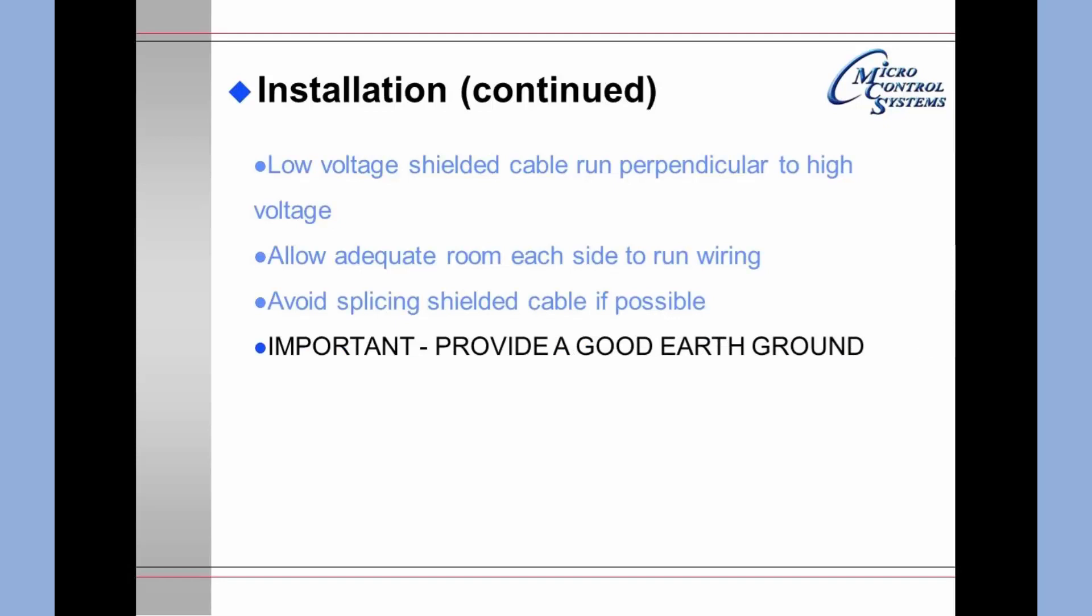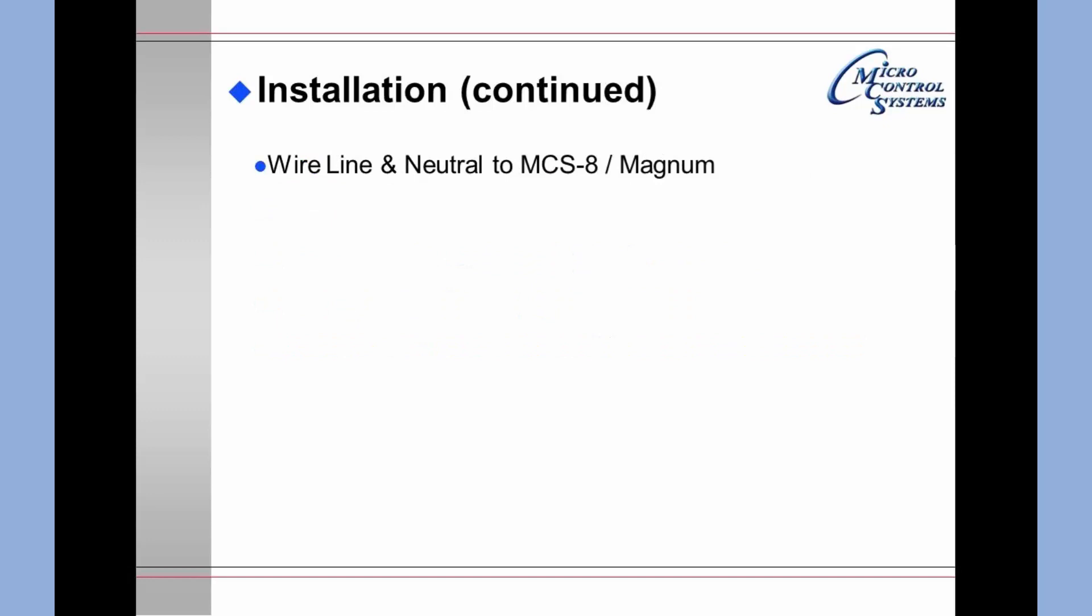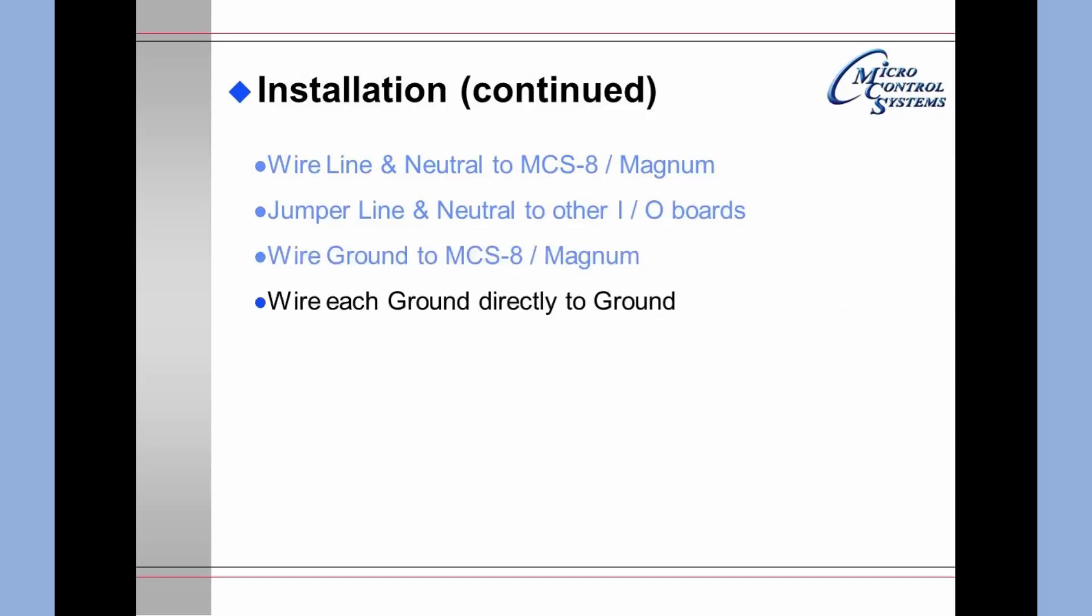Important: provide a good earth ground. When doing the wiring, you may wire the line and the neutral to the MCS-8 or the Magnum, and then you may jumper the line and neutral to all of the other input output boards. You will wire the ground to the MCS-8 or the Magnum, and then you will wire each switch ground directly to ground. Important: do not jumper the grounds. A ground wire should be connected to each board and then directly to ground.